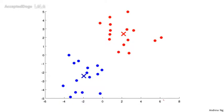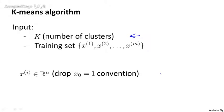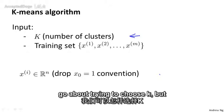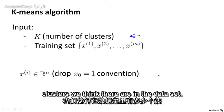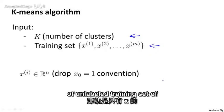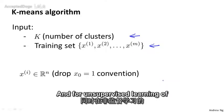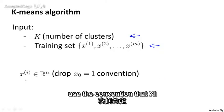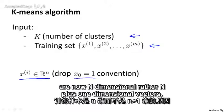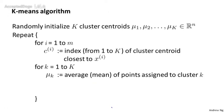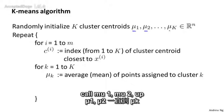Let's write out the k-means algorithm more formally. The k-means algorithm takes two inputs. One is a parameter k, which is the number of clusters you want to find in the data. K-means also takes as input an unlabeled training set of just the x's. Because this is unsupervised learning, we don't have the labels y anymore. For k-means, I'm going to use the convention that xi is an rn-dimensional vector. The first step is to randomly initialize k cluster centroids: mu1, mu2, up to mu k.